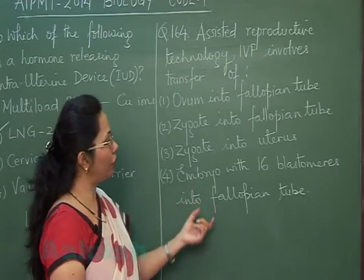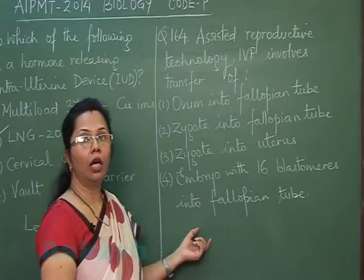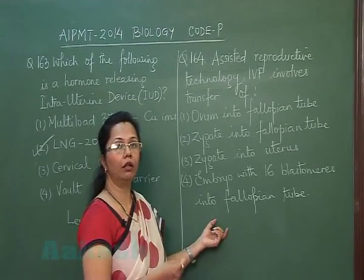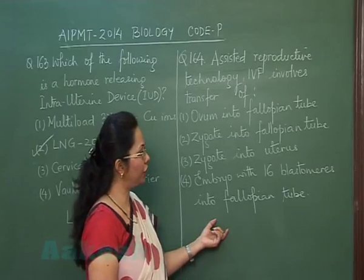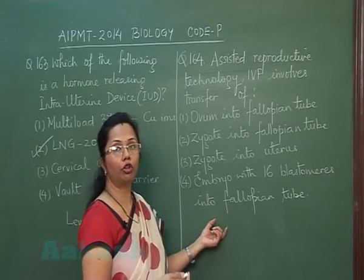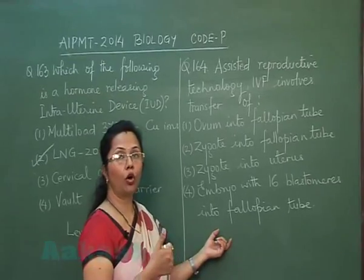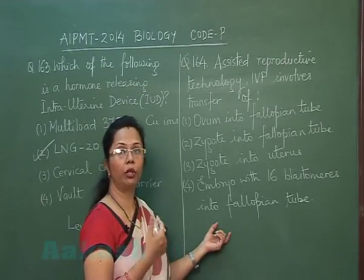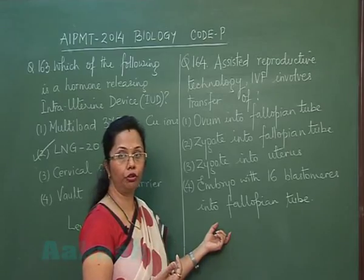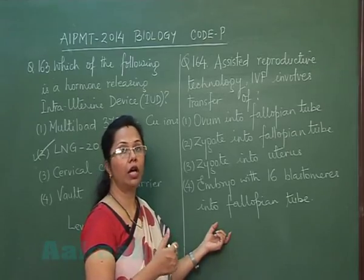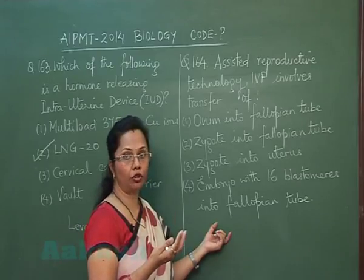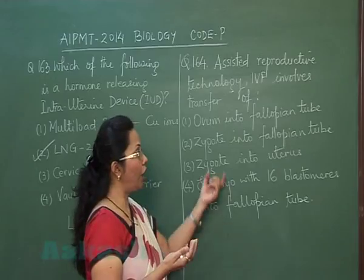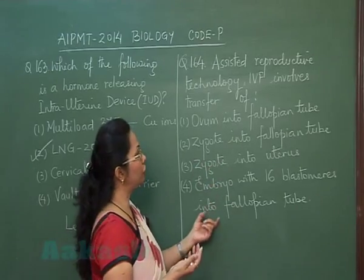Question 164: In vitro fertilization involves fertilizing the ovum and sperm in a glass test tube or petri dish. After fertilization, there are two options: either the zygote or the embryo up to eight blastomeres is transferred into the fallopian tube — called ZIFT — or embryos with more than eight blastomeres are transferred into the uterus.